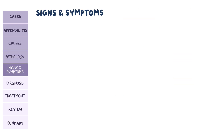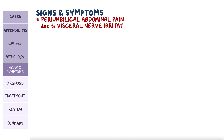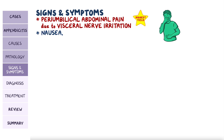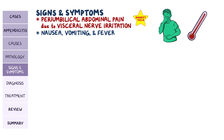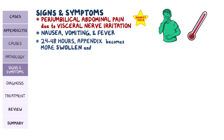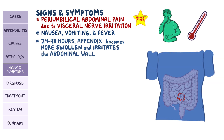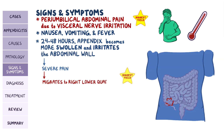Regarding symptoms, acute appendicitis typically starts with peri-umbilical abdominal pain due to visceral nerve irritation, followed by nausea, vomiting, and later on, fever. Within 24 to 48 hours, the appendix becomes more swollen and inflamed, and it irritates the abdominal wall, causing the pain to get more severe and migrate to the right lower quadrant, as well as causing a fever.